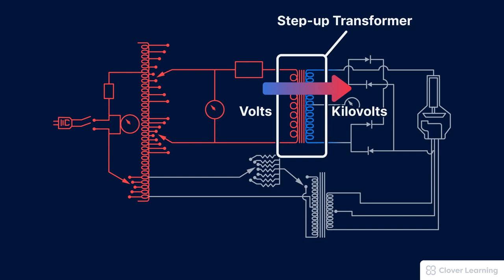Something else to notice is that the second set of coils, the blue coil, has more turns than the first set. This tells us that we are stepping up the voltage to kilovolts.